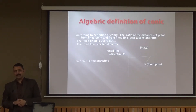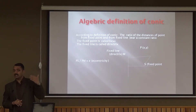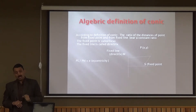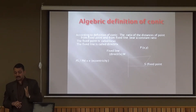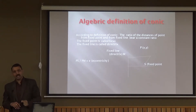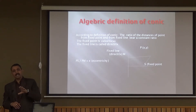Now we come to a very important concept: the algebraic definition of a conic. The earlier definition was based on cutting a plane through a cone. The algebraic definition states: the ratio of the distance of a point from a fixed point to its distance from a fixed line is always a constant ratio. That fixed point is called the focus and the fixed line is called the directrix.